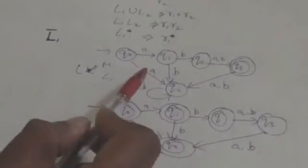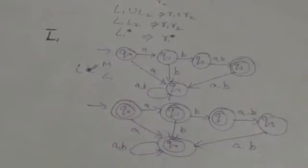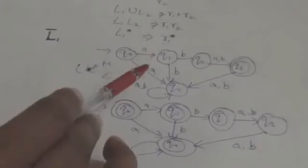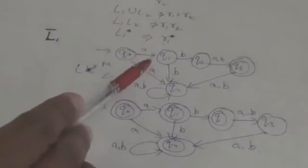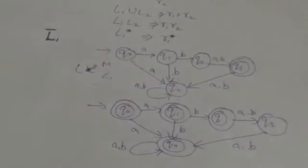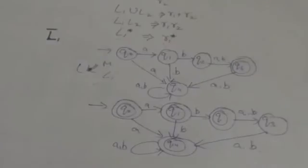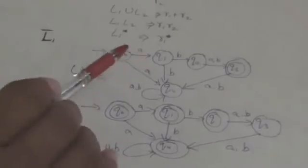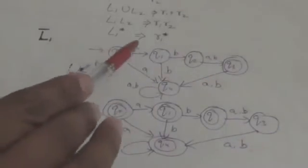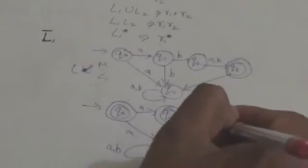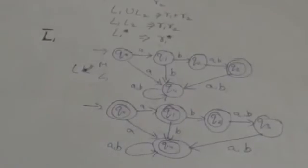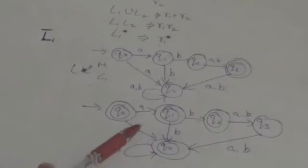This finite automata will not accept any string which is accepted by the original finite automata, and those strings which are rejected by the original should be accepted by the new one. What we have to do is convert all final states of this automata into non-final states, and non-final states of this automata into final states. This new automata will then accept the language which is the complement of the language accepted by the original automata.